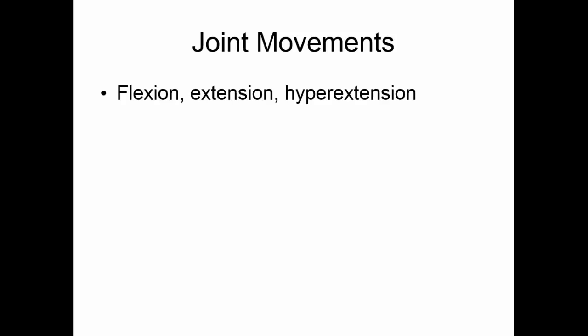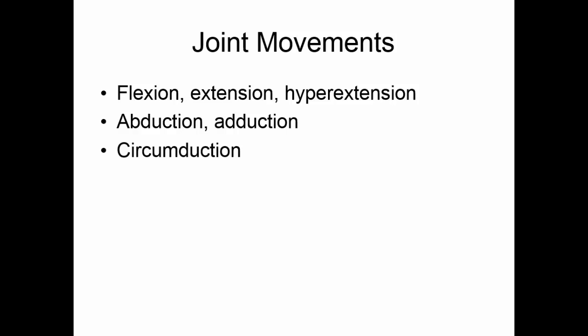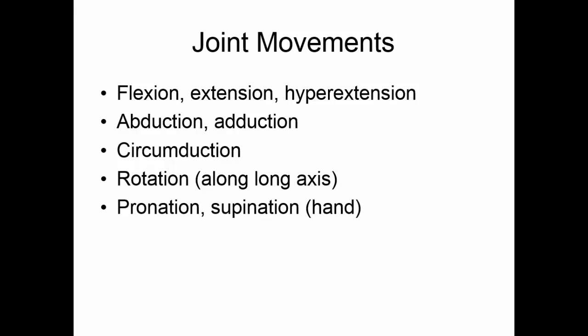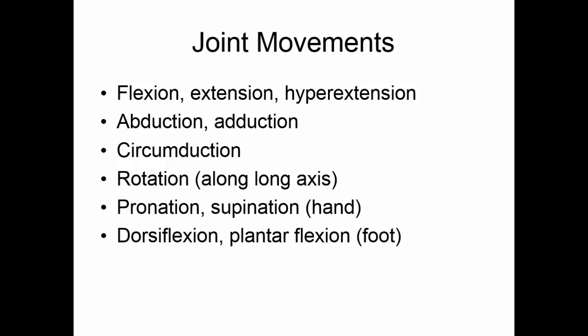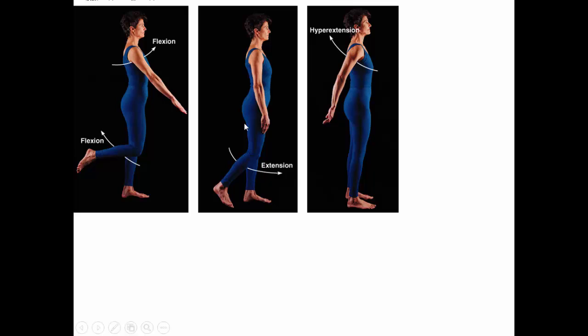There are several different types of joint movements. Flexion, extension, and hyperextension are front-to-back movements. Abduction and adduction are side-to-side movements. Circumduction is making a circle. Rotation is rotating along a long axis. Pronation and supination are special movements of the hand, and dorsiflexion and plantarflexion are special movements of the foot. Here you see flexion, extension, and hyperextension.